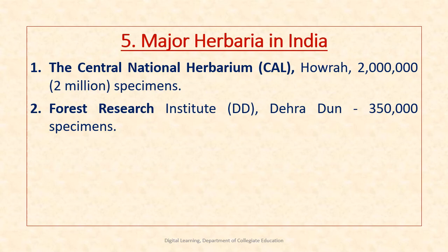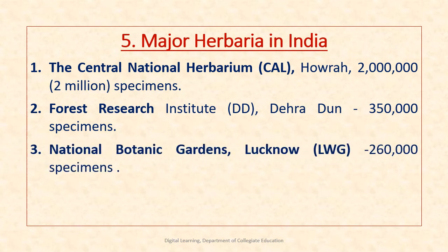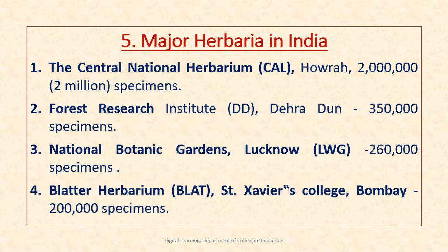Major herbaria in India: The Central National Herbarium, Howrah, was established in 1795 and comprises about 2 million specimens — it is the first herbarium in the country and one of the most important Asian herbaria. The Forest Research Institute, Dehradun, has about 3,50,000 specimens. National Botanical Garden, Lucknow, has 2,60,000 specimens. Blatter Herbarium, Bombay, has 2,00,000 specimens. The Botanical Survey of India has many regional centers maintaining different herbaria across India.